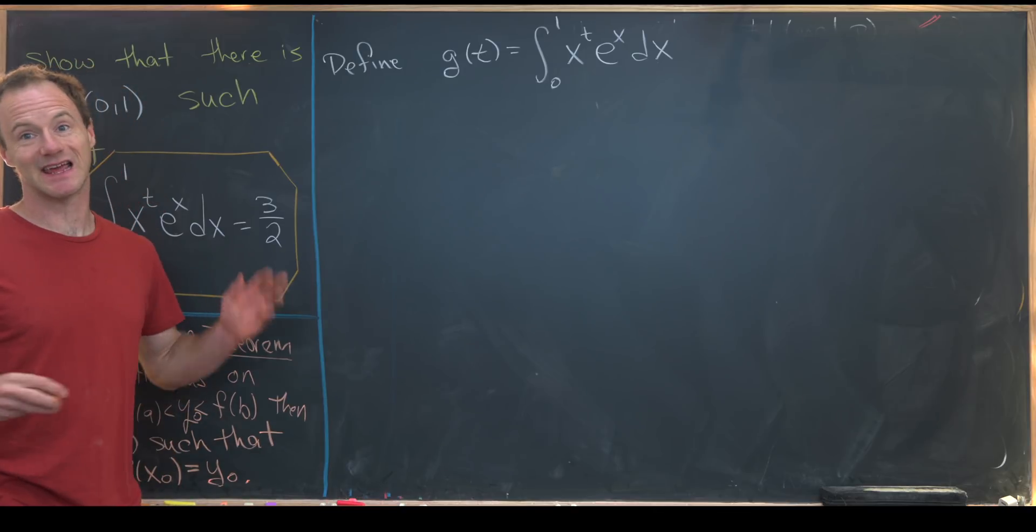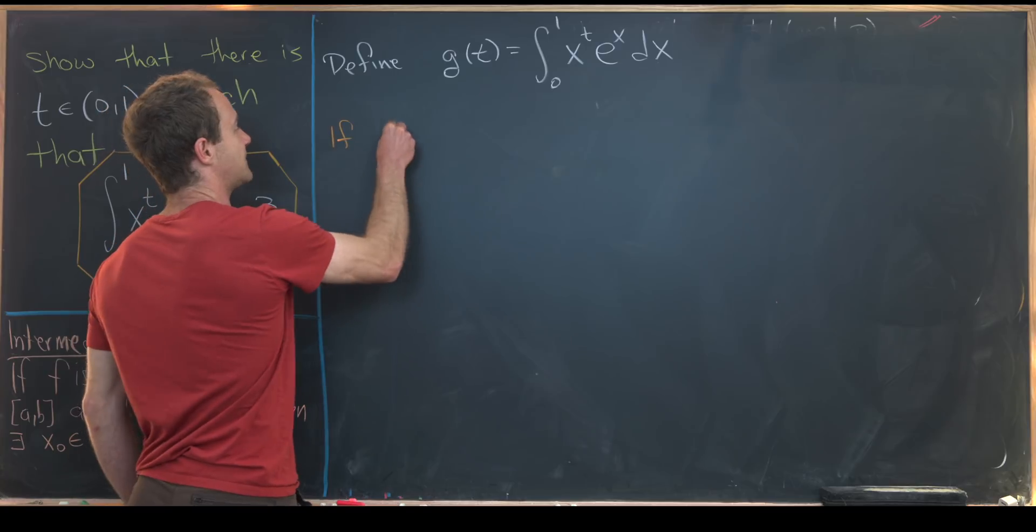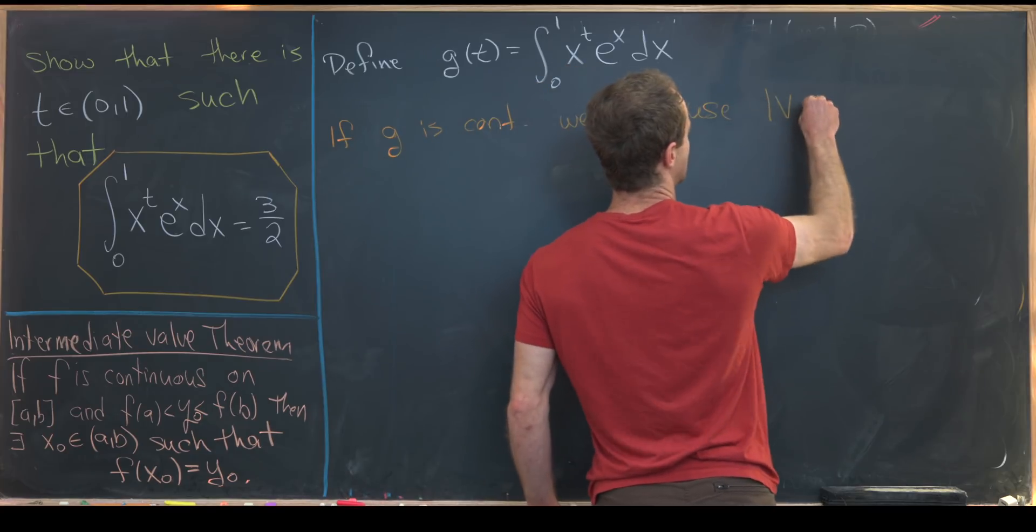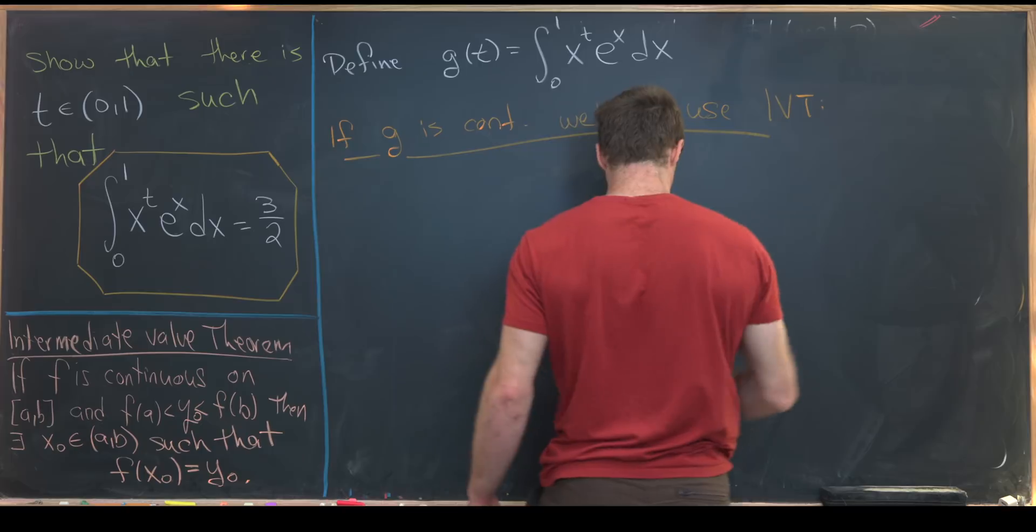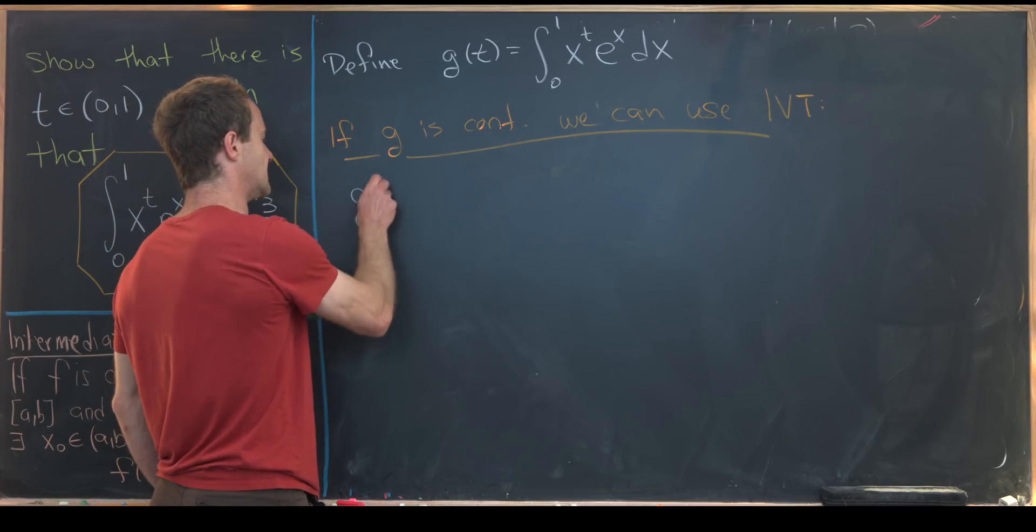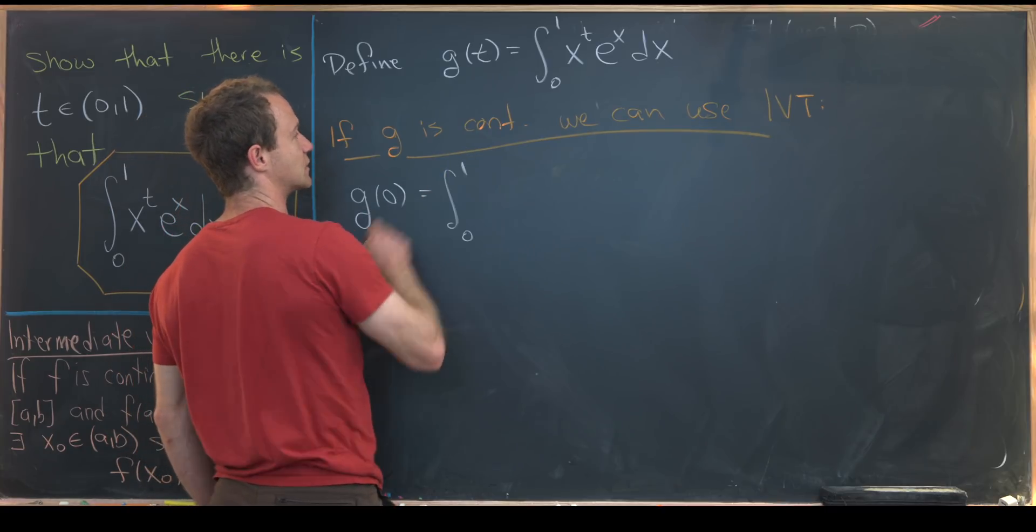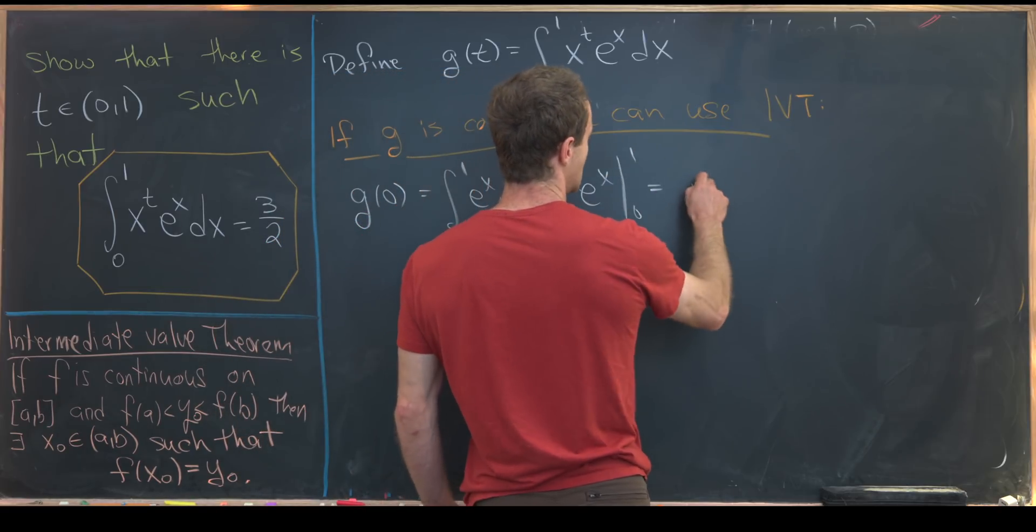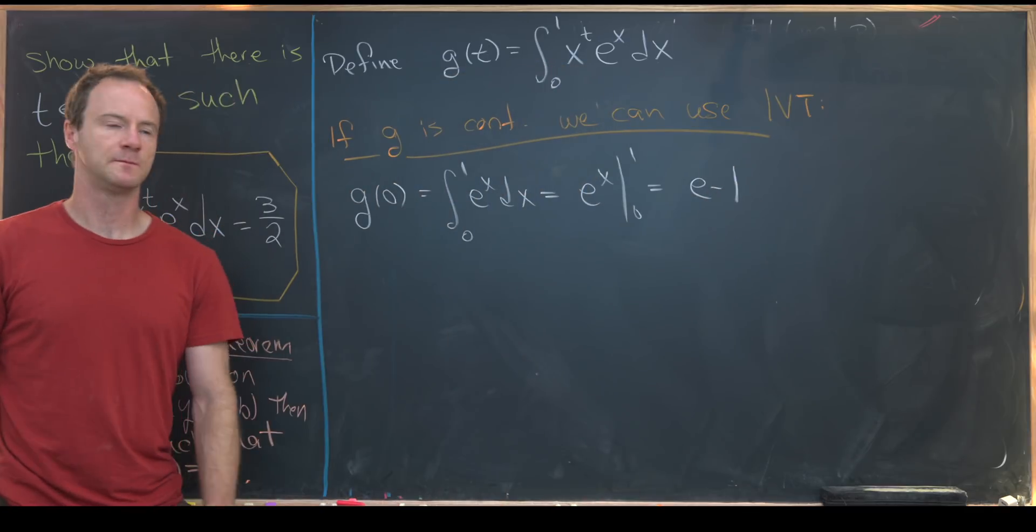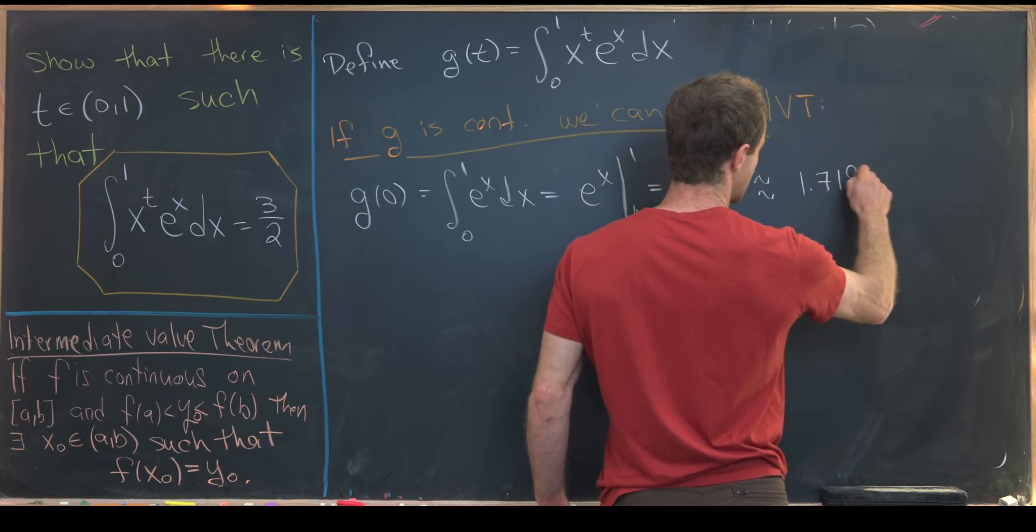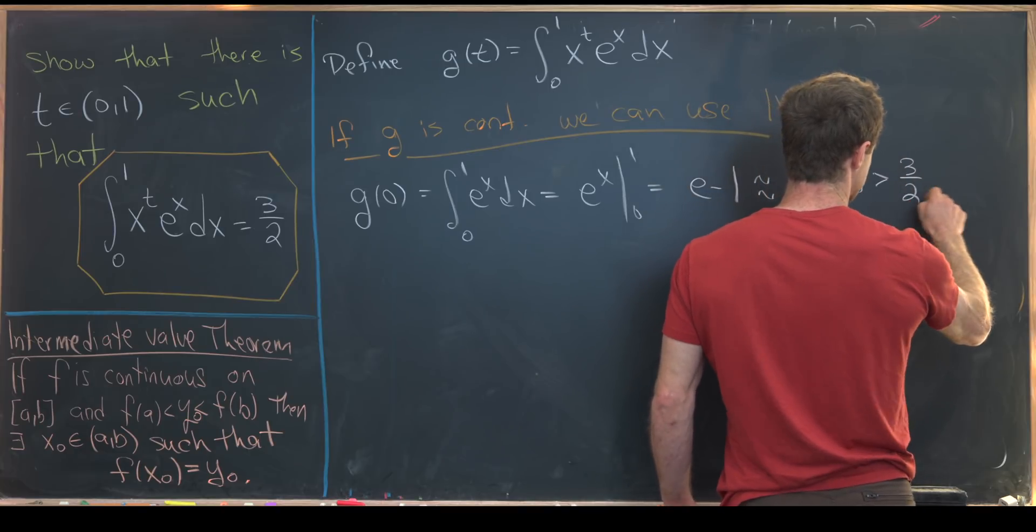Now let's just play a best case scenario type thing. So if g is continuous, we can use the intermediate value theorem. But that's a big if because we haven't shown that it's continuous yet. But let's say that we could show that, and we'll do that at the end of the video. So let's calculate g evaluated at zero. Notice that is the integral from zero to one of e to the x dx, which is e to the x evaluated from zero to one, which is e minus one. But recall that e is like 2.718. So subtracting one, we get 1.718. Notice that is bigger than 1.5, which is 3 over two.